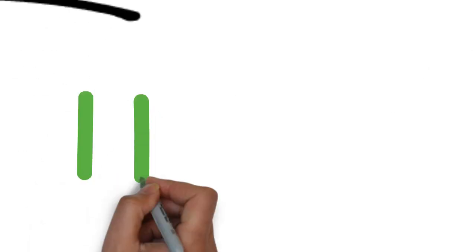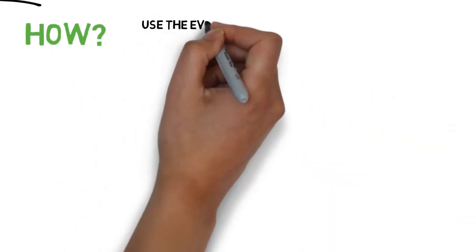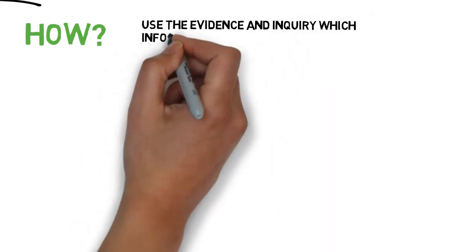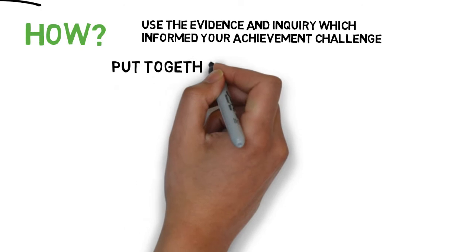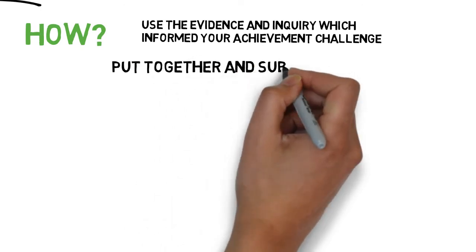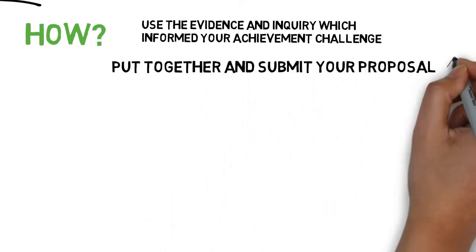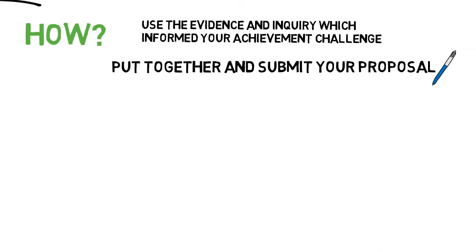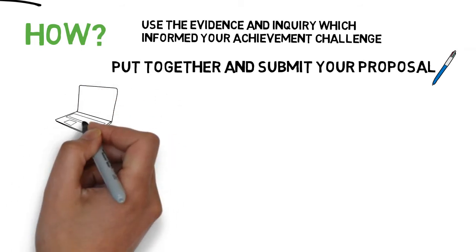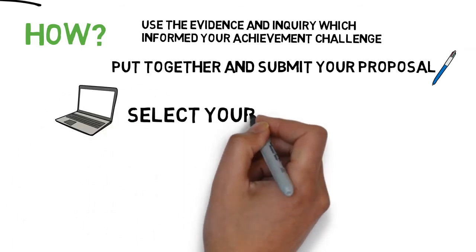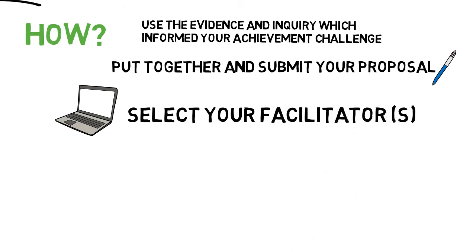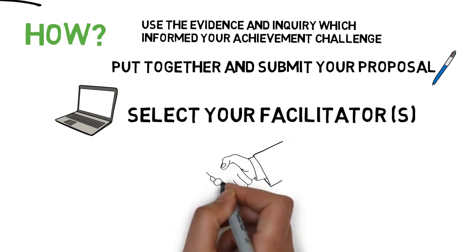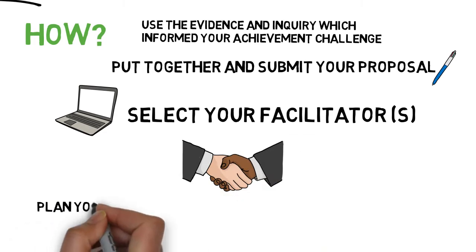There are four key steps to accessing PLD. One, using the inquiry you undertook when developing your achievement challenge to inform your PLD needs. Secondly, putting together and submitting your proposal. Thirdly, selecting your facilitator or facilitators. Fourthly, planning for your PLD delivery with your facilitator.